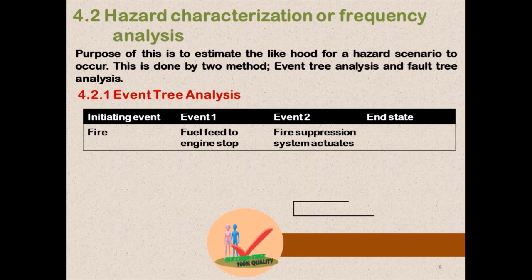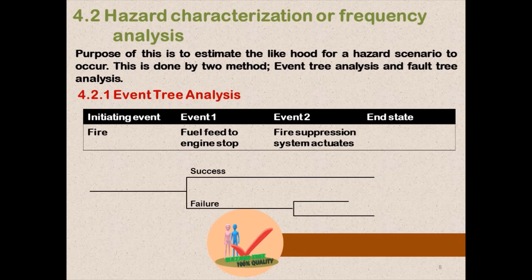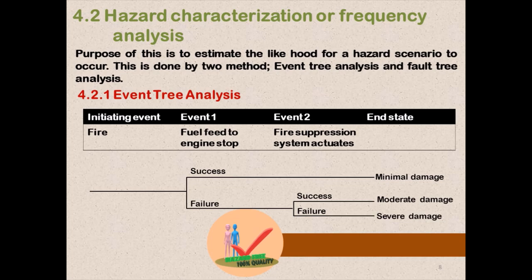Sometimes in a production area this may divide into more events, but for convenience I have used fire as the initiating event. If there is a fire in a production area, in event 1 we attempt to cut fuel feed to the engine. If that is successful, it is okay. If it fails, we move to event 2: the fire suppression system. If event 2 is also unsuccessful, there will be severe damage. If event 2 is successful, there will be moderate damage. If event 1 was already successful, there will be minimal damage. This is the event tree analysis.